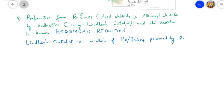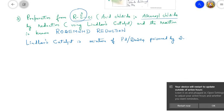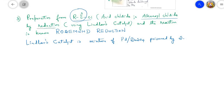The third method of preparation of aldehydes is from acid chlorides. Acid chlorides have the formula R–C(=O)–Cl, and in IUPAC terminology are called alkanoyl chlorides. When acid chlorides are subjected to reduction using Lindlar's catalyst, the reaction is known as Rosenmund reduction. Lindlar's catalyst is palladium metal supported on barium sulfate, poisoned by sulfur — this means the reduction stops at the aldehyde stage and the aldehyde is not further converted to an alcohol.